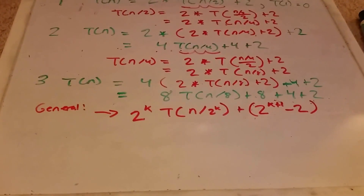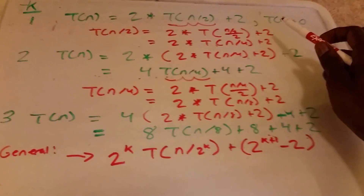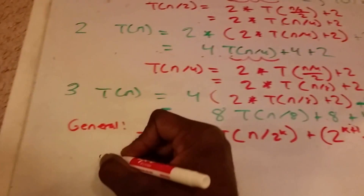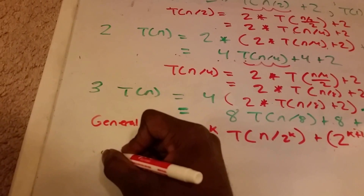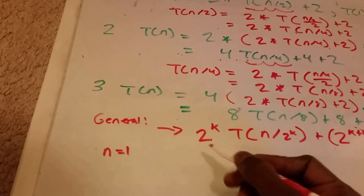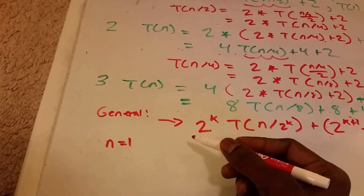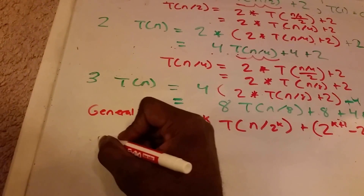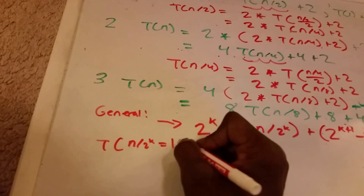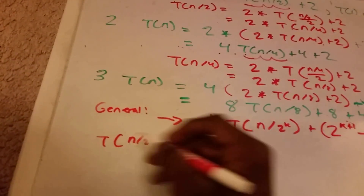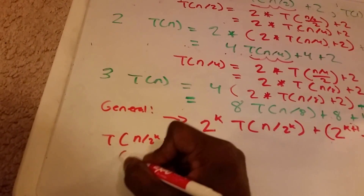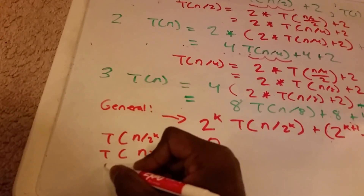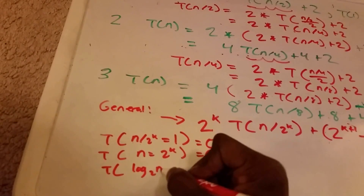Now we want to get this in terms of N. We know that when N equals 1, T equals 0. We want N to equal 1, and that's going to happen when N divided by 2^K equals 1. So we want T(N/2^K) to equal 1 because this will equal 0. This means N equals 2^K, and therefore log base 2 of N equals K.